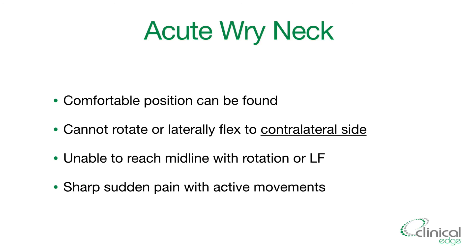The features of your acute wry neck are that there's a comfortable position that you can find. They can't rotate or laterally flex to their contralateral side — so if they've got pain on the right, they're having trouble rotating or laterally flexing to their left. They're unable to reach the midline with their rotation or lateral flexion, and they get sharp, sudden pain with active movements.